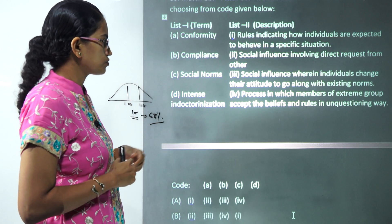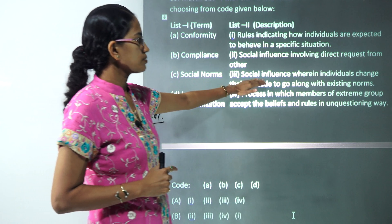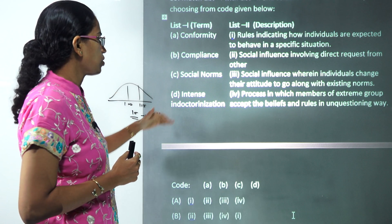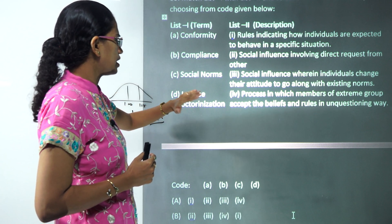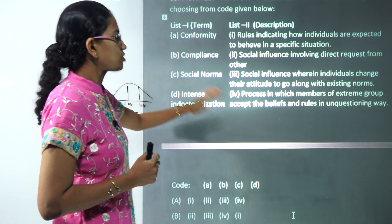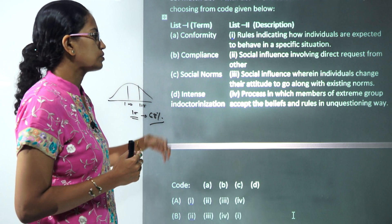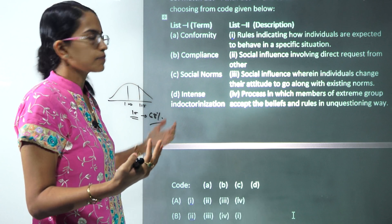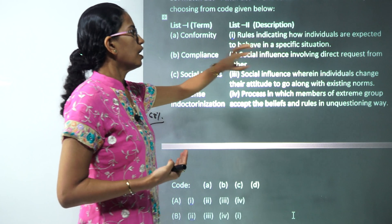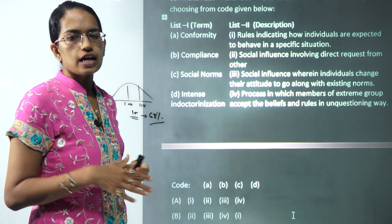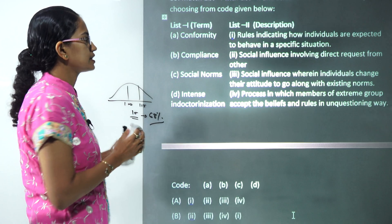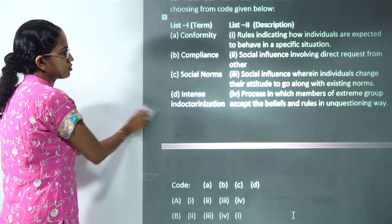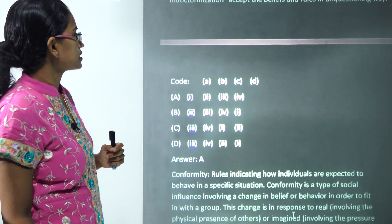The next question asks you to match terms with descriptions. Compliance is social influence involving direct requests from others. Social norms involve individuals changing their attitude by going along with existing norms. Indoctrination involves processes where members of an extreme group accept a belief in an unquestioned way. Conformity explains the rules indicating how individuals will behave in a given situation.